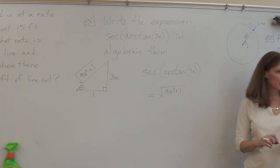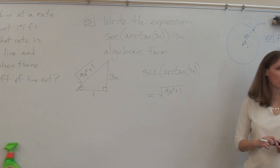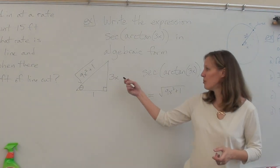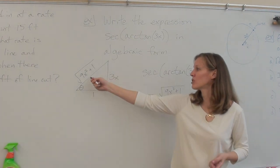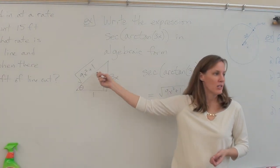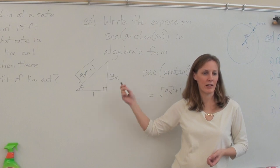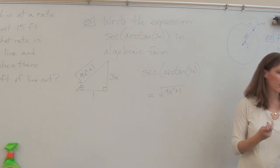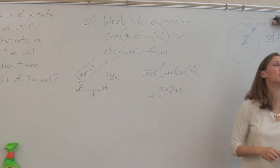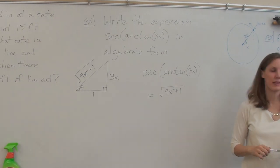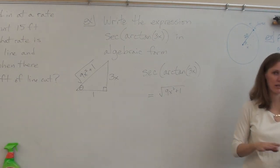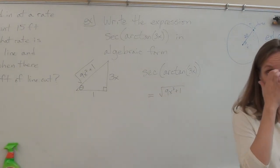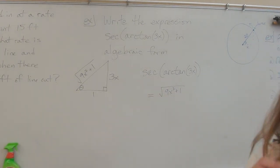If I had asked for the sine instead, it would be 3x over √(9x² + 1). Once you have all the sides labeled you can find any trig ratio. No rationalizing needed — leave the answer as is. That's enough for today; tomorrow we're going to take this into calculus.